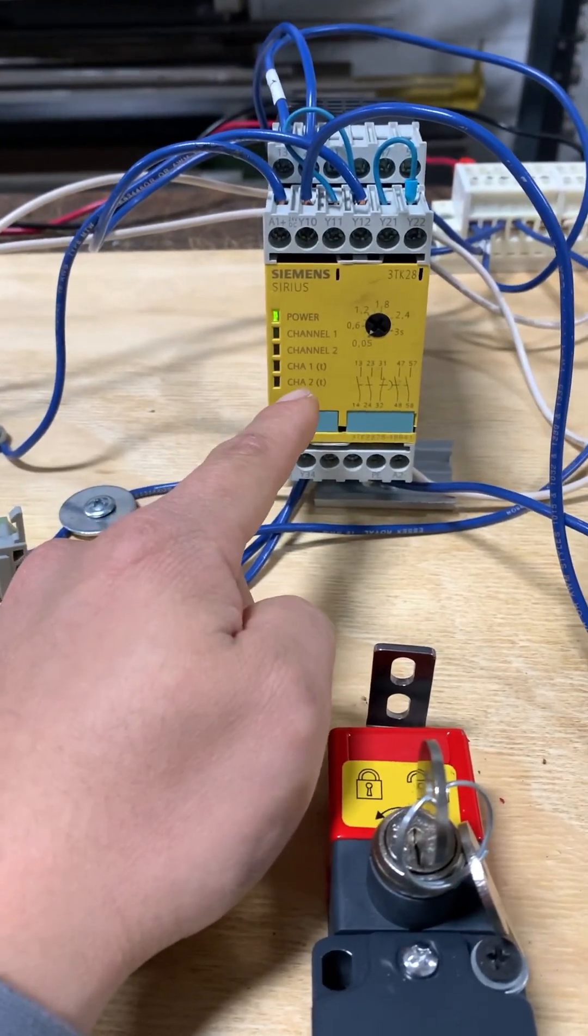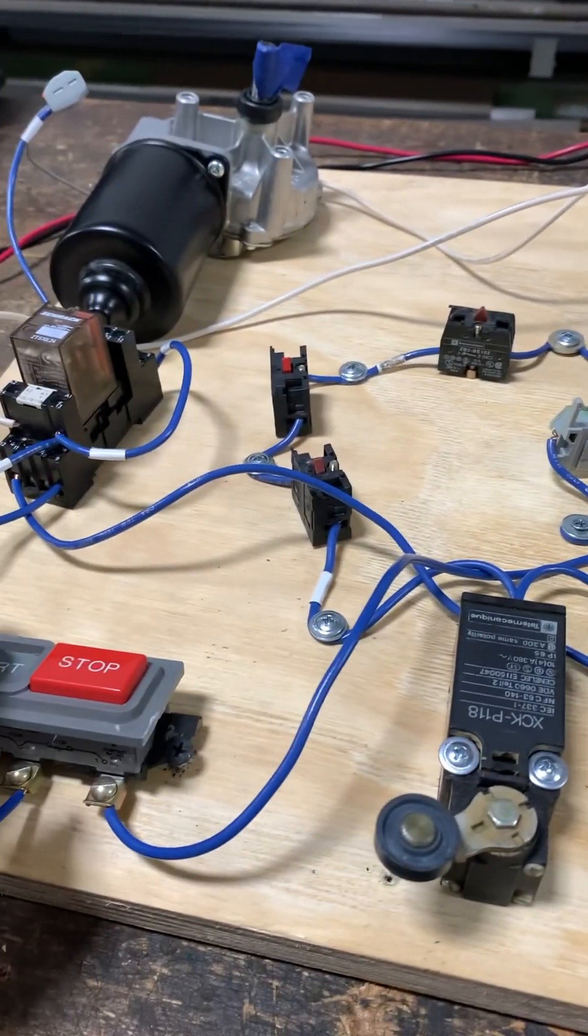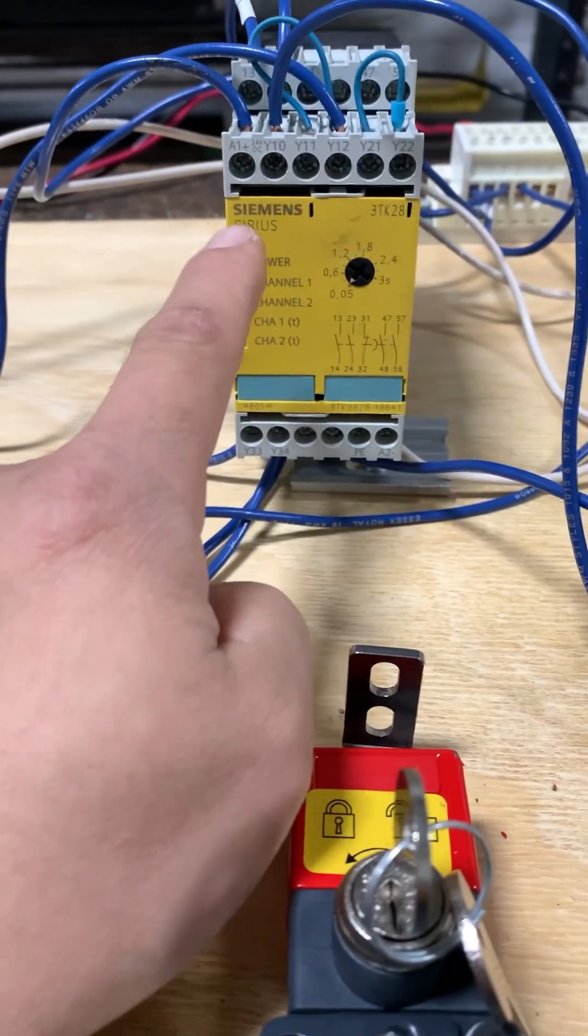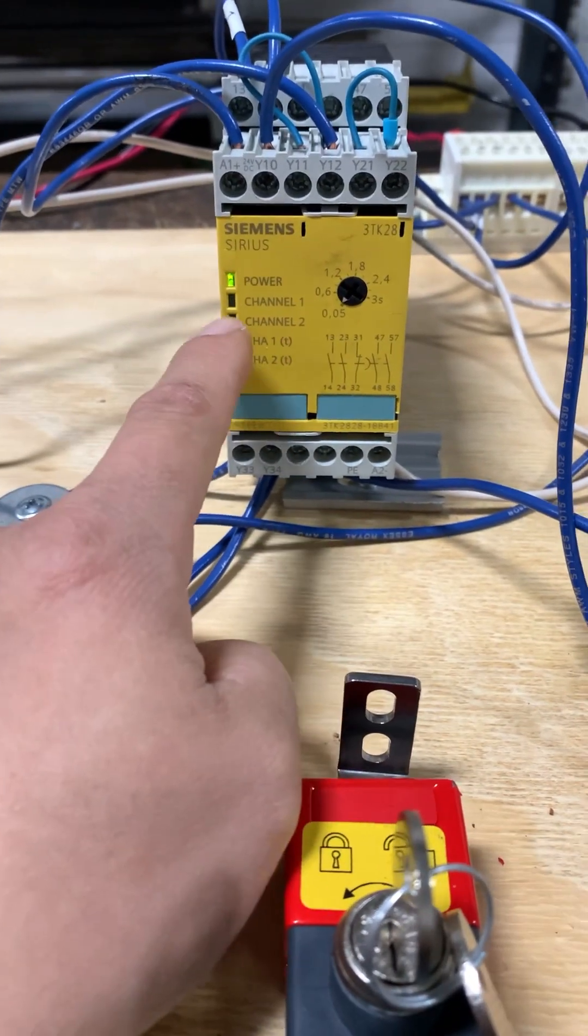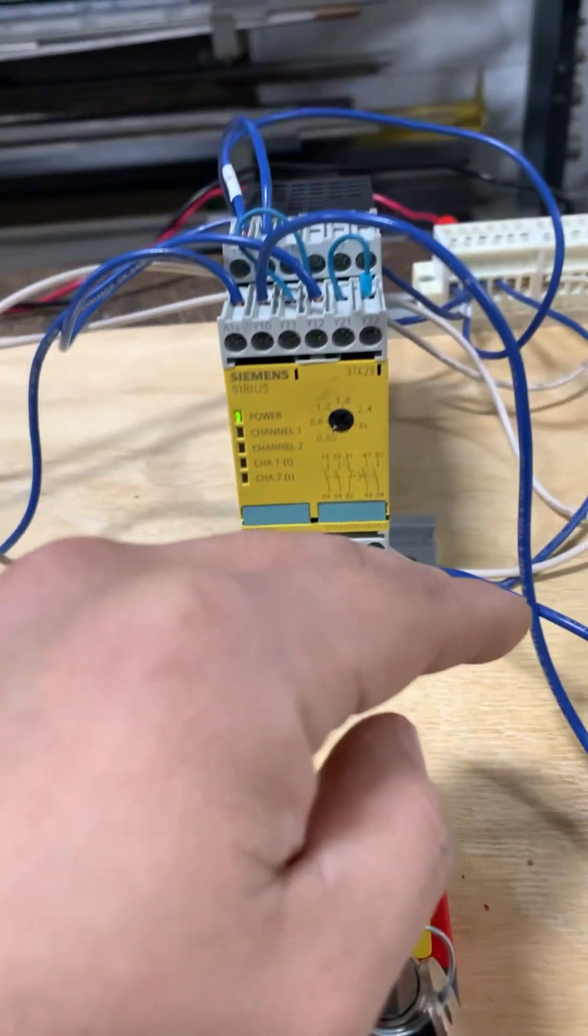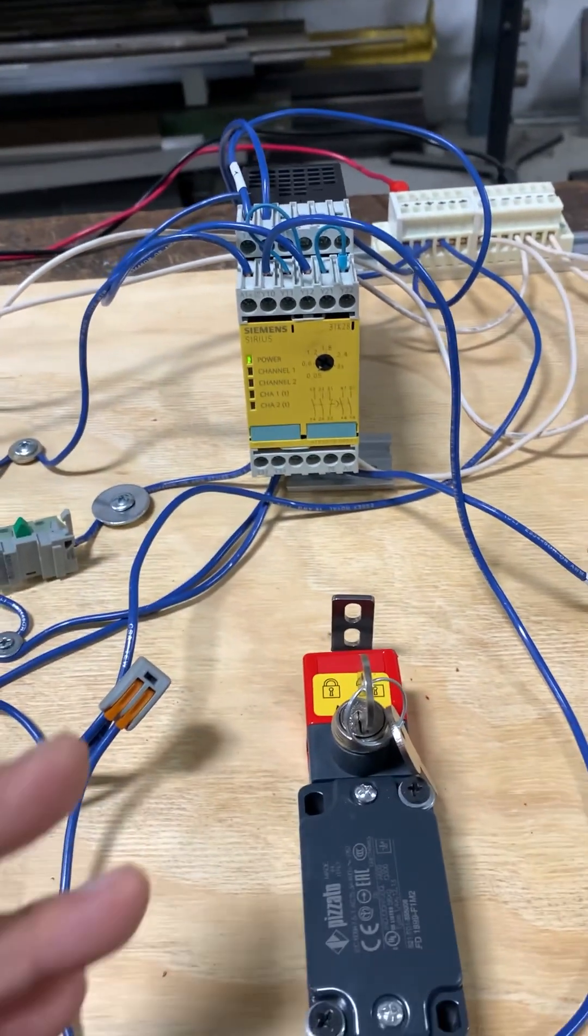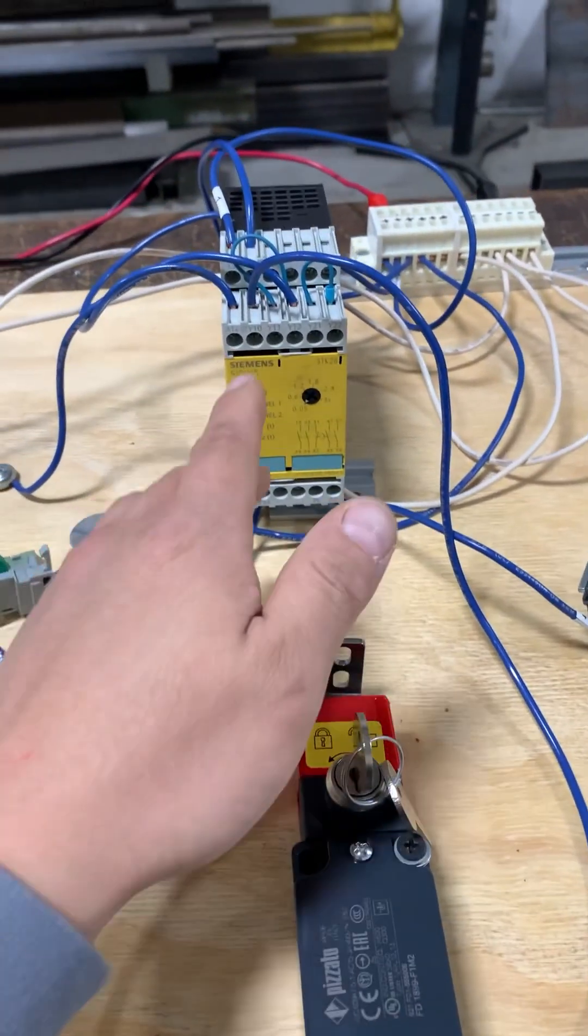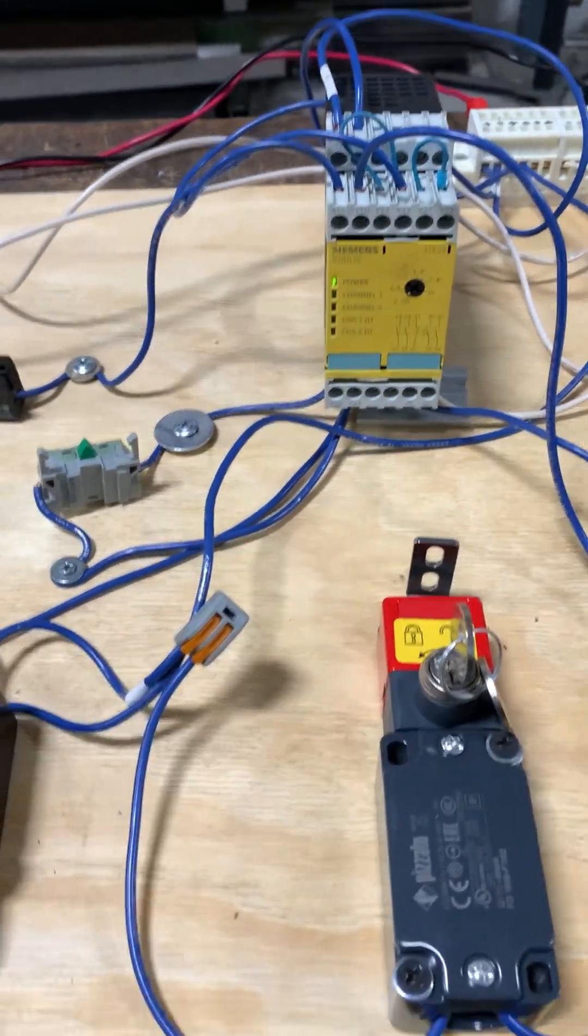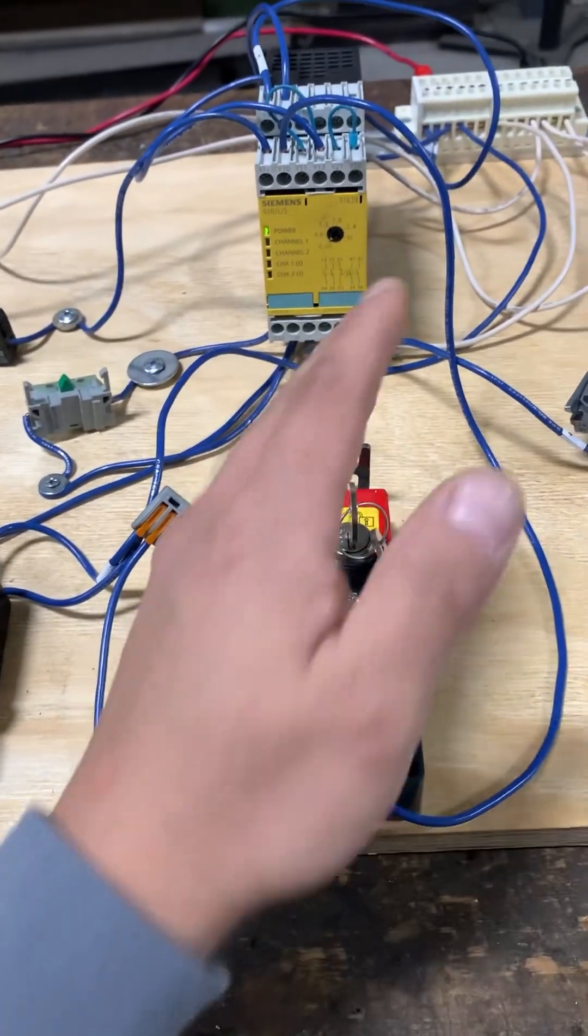So if you're ever having a problem with no control power to your machine, go ahead and open up your cabinet and take a peek at your safety relay. Make sure that all your channels are made and your safety relay is ready to go. And if it's not, then you just pull out the schematic and look at the safety circuit. So in this case here, this is my safety circuit.